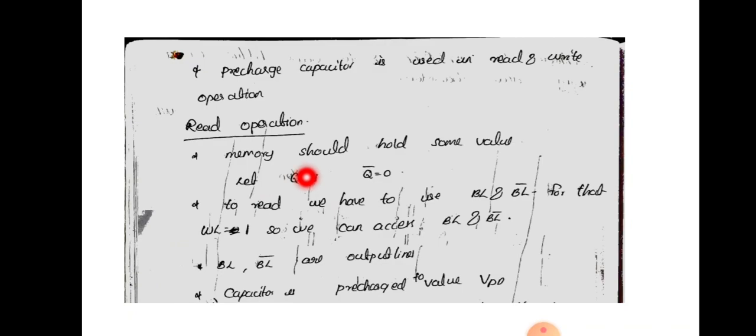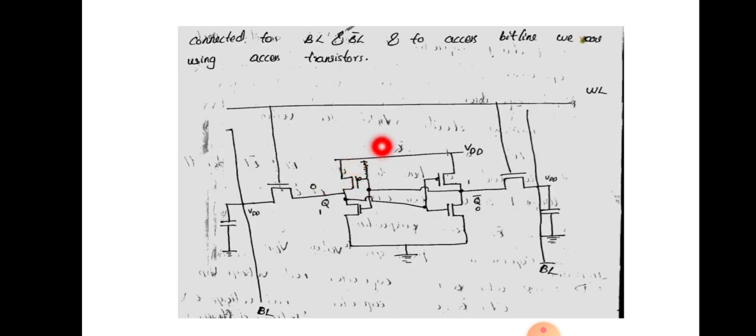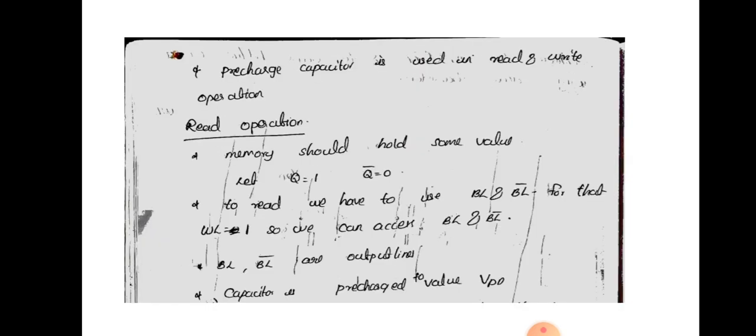Now let us see the read operation. Suppose the value in memory is Q equals 1 and Q-bar equals 0, and we have to read this value. We will also discuss reading when Q equals 0 and Q-bar equals 1. For the read operation, there should be some value already in the memory — let that value be Q equals 1 and Q-bar equals 0.